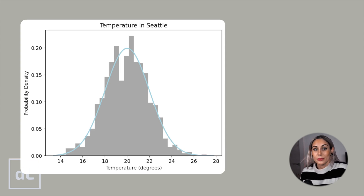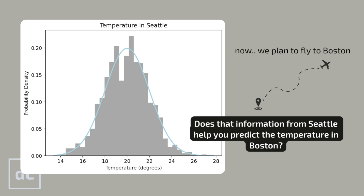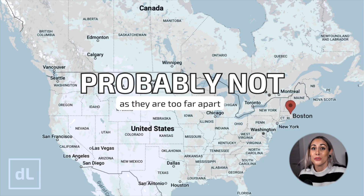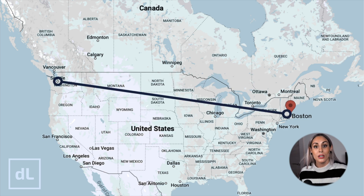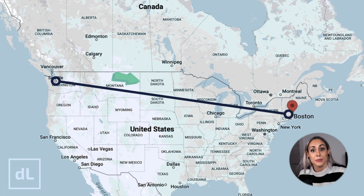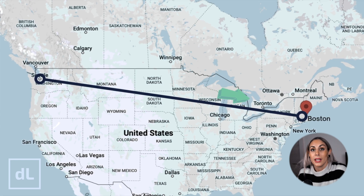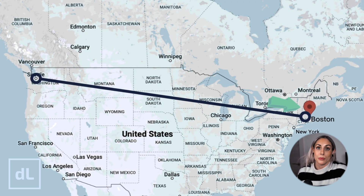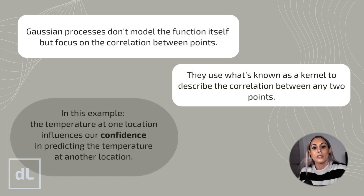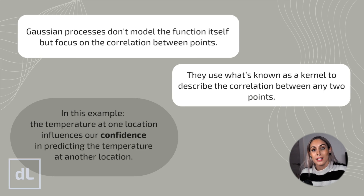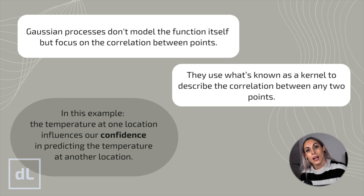You arrive in America and your first stop is Seattle. Now you actually know the temperature in Seattle because you are there, and you plan to fly to Boston. Does that information from Seattle help you predict the temperature in Boston? Probably not, as they are too far apart geographically. However, if we imagine a line between Seattle and Boston, the closer you get to Boston, the more informative the temperature readings become. For example, if you are 10 miles outside Boston and know the temperature is 24 degrees, you can be reasonably confident it won't be 18 degrees in Boston. This concept aligns with Gaussian processes, which don't model the function itself but focus on the correlation between points. They use a kernel function to describe this correlation structure — understanding how knowing the temperature at one location influences our confidence in predicting the temperature at another location. Factors like distance and historical data help us model this correlation effectively.